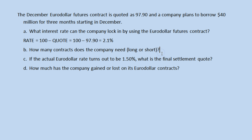Next question: how many contracts does the company need? The Euro-dollar futures contract is for $1 million. This company needs to borrow $40 million, so 40 is the answer. We also need to know long or short. This company is planning to borrow $40 million, so it needs these contracts to be short.